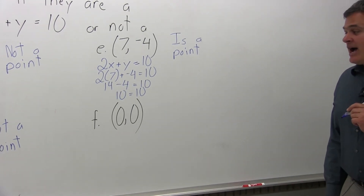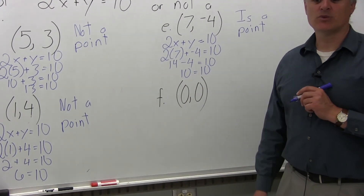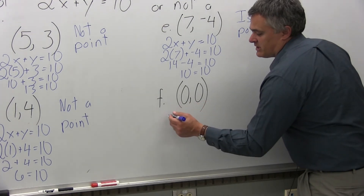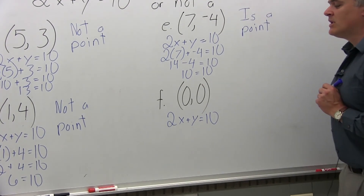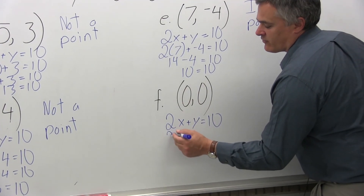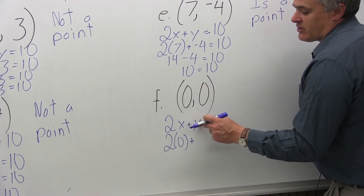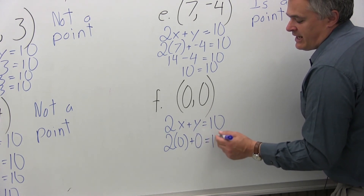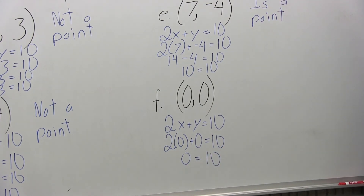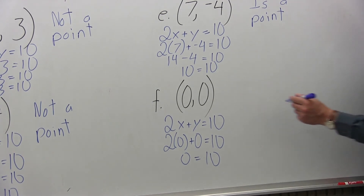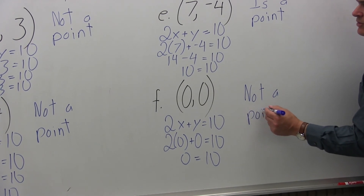Finally, Part F: determine if the point (0, 0) is a point on the graph of the line 2x plus y equals 10. Starting with 2x plus y equals 10, put in the x-coordinate of 0 for x, giving 2 times 0, and the y-coordinate is also 0. The equation is not true — you wind up with 0 equals 10, which is not true. So (0, 0) is not a point on the graph of 2x plus y equals 10.